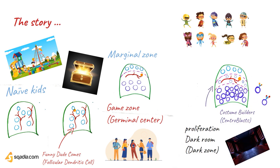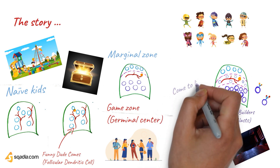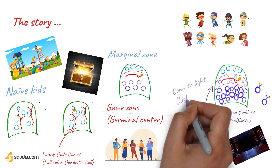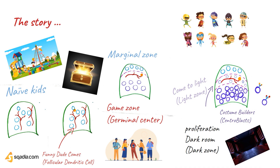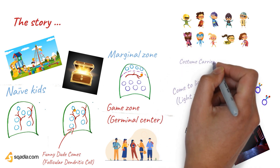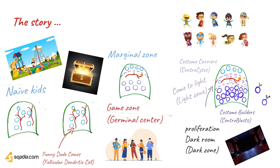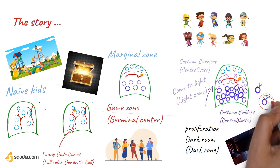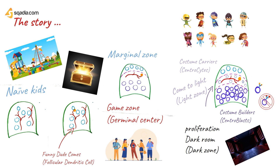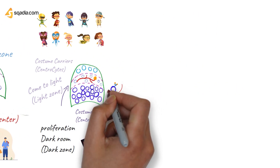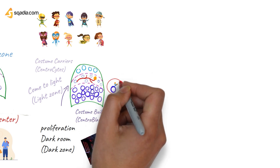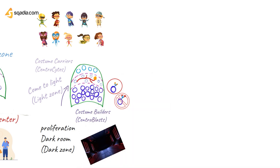Once the centroblasts proliferate and combine textiles and colors to make up the perfect matching costume — meaning they proliferate and hypermutate in the dark zone — they are ready to come to the light zone. The light zone contains costume carriers, the centrocytes. If a guy does not wear a costume that perfectly matches the jewels of the treasure, that guy is eliminated — he undergoes apoptosis.